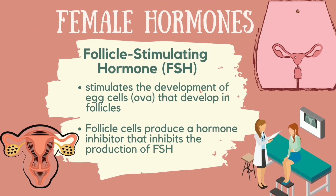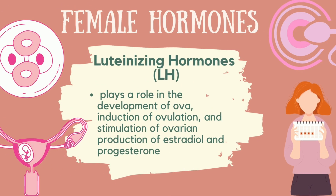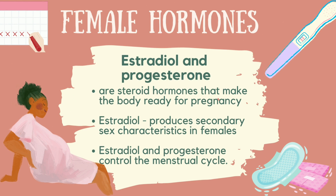Next, we have the follicle-stimulating hormone, or FSH. It stimulates the development of egg cells, or ova, that develop in follicles. Follicle cells produce a hormone called inhibin that inhibits the production of FSH. Another one is the luteinizing hormone, or LH. It plays a role in the development of ova, induction of ovulation, and stimulation of ovarian production of estradiol and progesterone. Estradiol produces secondary sex characteristics in females, while estradiol and progesterone together control the menstrual cycle.